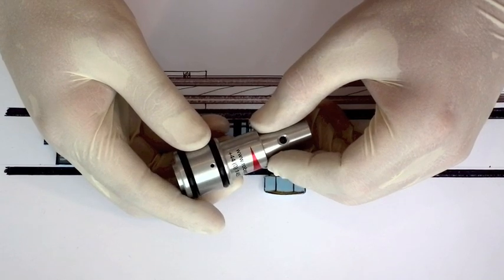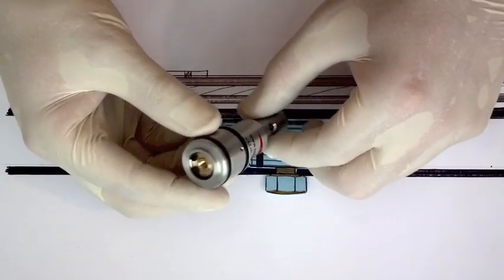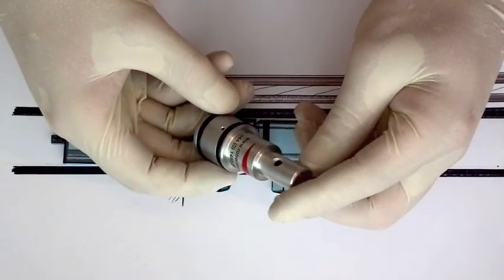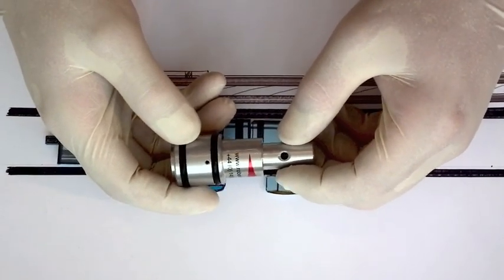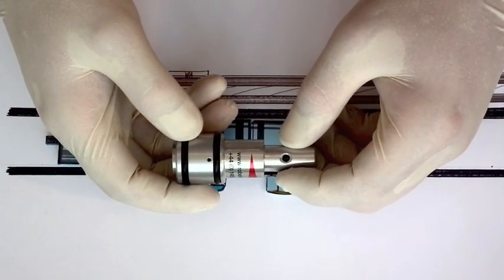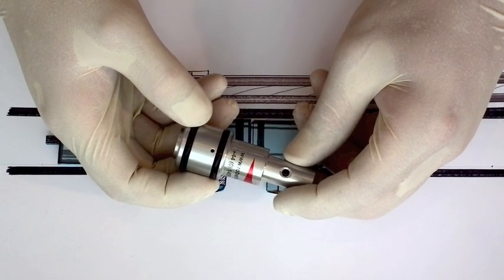This video today is a simple tutorial on fitting one of our pressure regulation valves into a Benjamin Marauder or a Benjamin Marauder platform custom PCP air rifle.